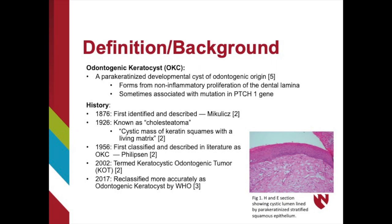It forms from non-inflammatory proliferation of the dental lamina. The OKC is also sometimes associated with a mutation in the PTCH1 gene. The OKC was first identified in 1876 and was known as a cholesteatoma, which is a cystic mass of keratin squames with a living matrix.